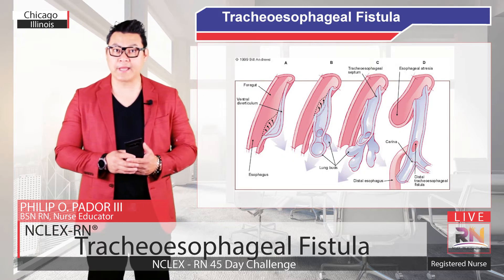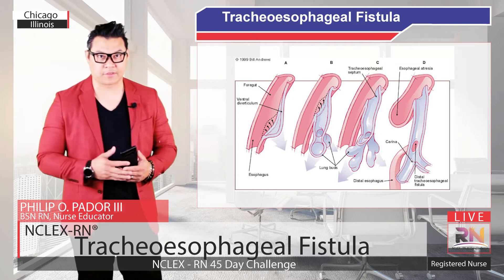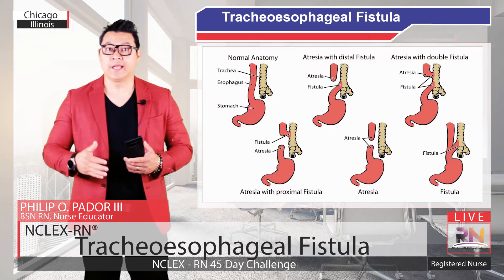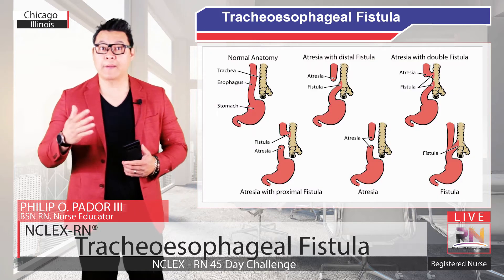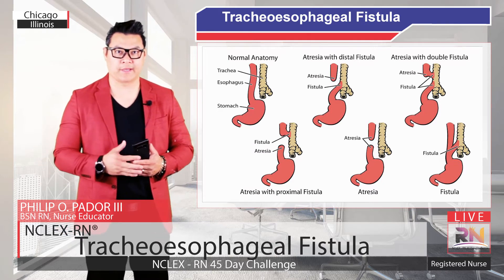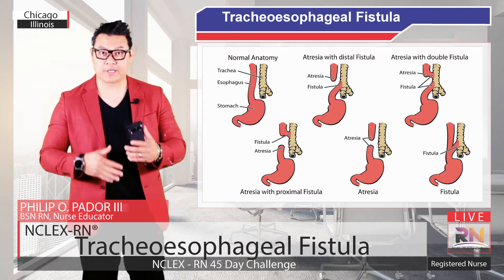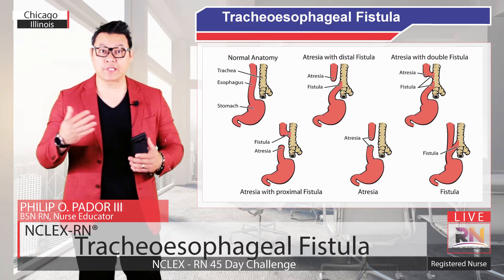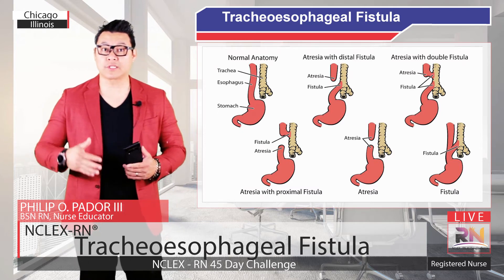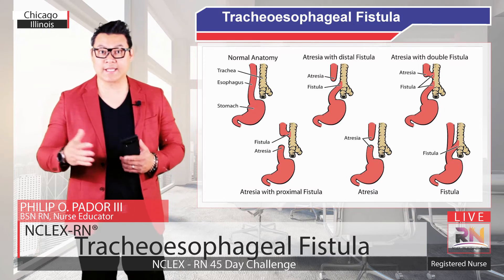The esophagus and the trachea may also have an abnormal connection called tracheoesophageal fistula. Here we see the most common type of tracheoesophageal fistula in the newborn infant. The upper esophagus ends in a blind pouch and the lower esophagus connects to the trachea. This is a serious problem because the stomach contents can travel up the esophagus and pass through the fistula into the trachea and into the lungs. The fistula can also cause difficulty breathing for the newborn since air can now bypass the lungs and enter the stomach.